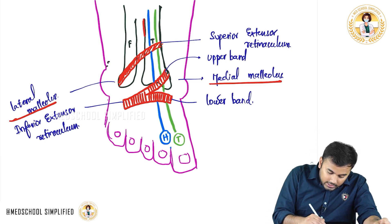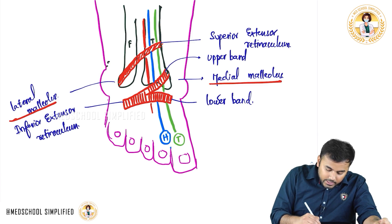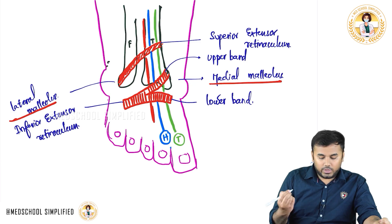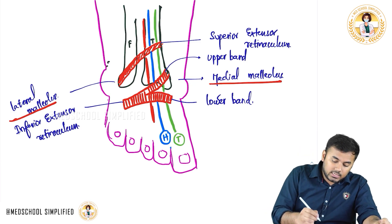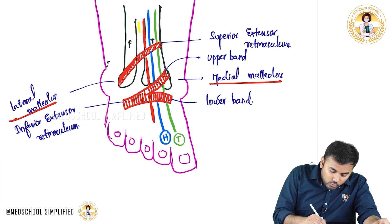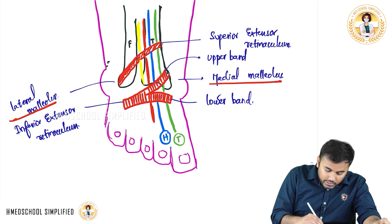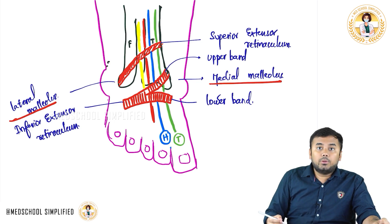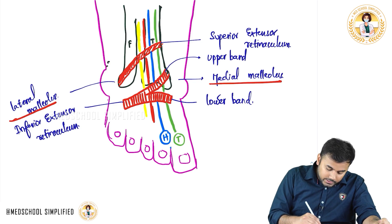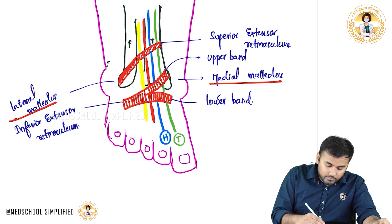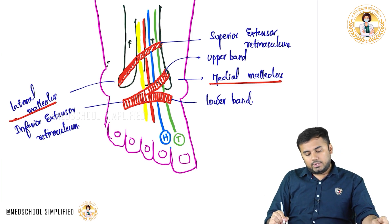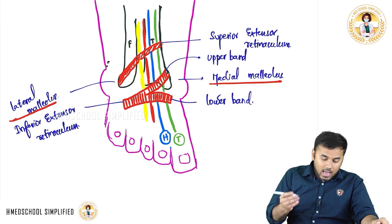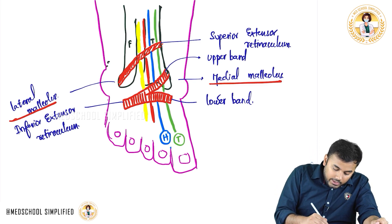Just to the side of extensor hallucis longus here you have got an artery. This artery over here is called anterior tibial artery. Just to the side of this artery you have got a nerve which I'm drawing in yellow color. This nerve over here is called deep peroneal nerve.